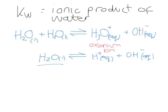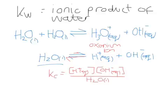Now water only dissociates by a very small amount and the equilibrium actually lies very heavily to the left. However, it's still an equilibrium and we can write an equilibrium expression where we've got the concentration of the products divided by the concentration of the reactants. The reactant here is just water and it barely dissociates at all, so its concentration is constant. We can modify this expression and give it the term KW.